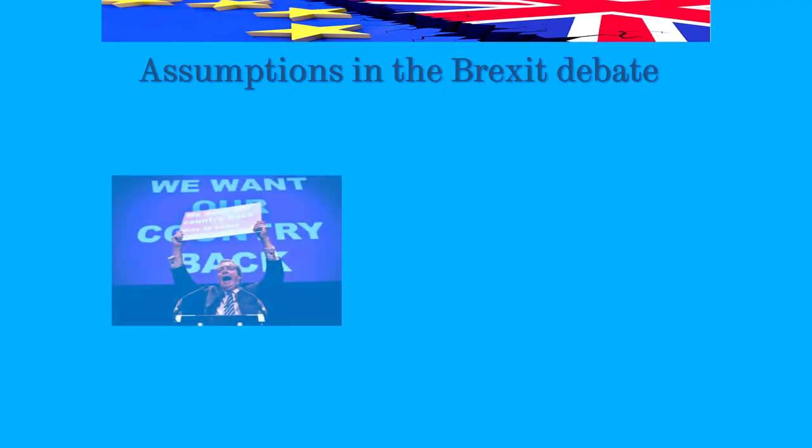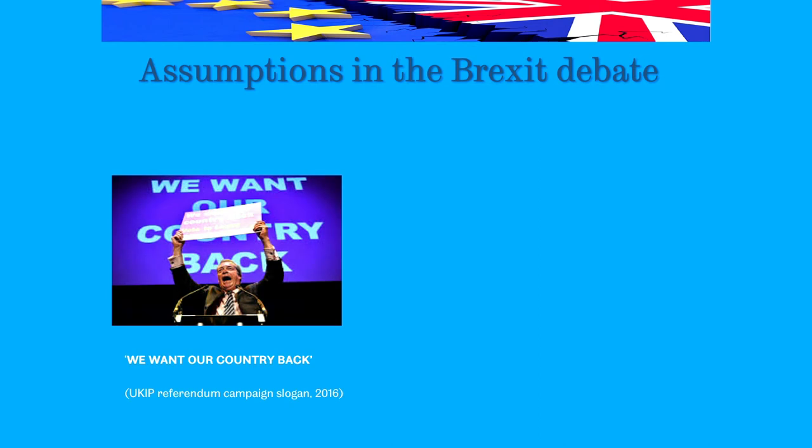The UK recently voted to leave the EU — this is known as Brexit. Prior to this, there was a referendum campaign led by politicians. The UK Independence Party's campaign slogan was quite simple: 'We want our country back.' It's quite simple, but it's quite a powerful slogan, and it's powerful because it contains a number of assumptions. Let's see if we can unpack those.